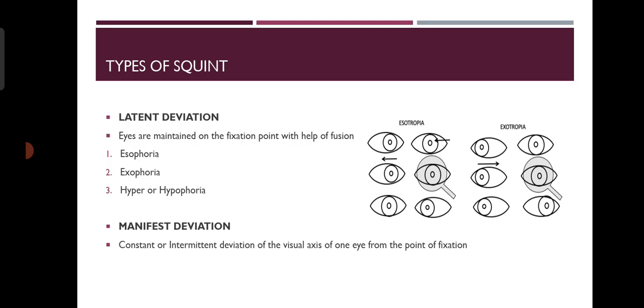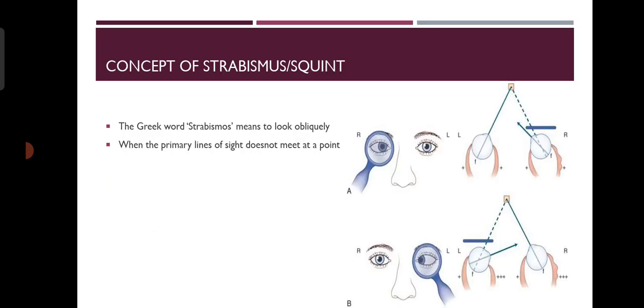In manifest deviation, the fusion abilities are not able to balance and maintain fusion, so there is a deviation and the two images cannot be fused. That is a manifest deviation — a constant or intermittent deviation of the visual axis of one eye from the point of fixation. As you can see here, the right eye is having squint; the visual axis is missing the fixation point. This is a manifest squint.